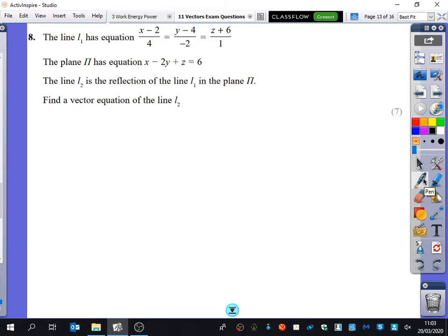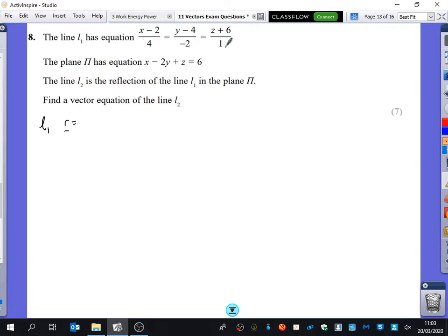Yeah, I'm going to put them into the forms that we prefer to deal with. So what is the vector equation of this? R equals 2, minus 6, I'm just going to keep this bit separate for a second, 4 minus 2, 1. The reason I keep them separate is because it makes it super clear what's the point on the line and what's the direction.